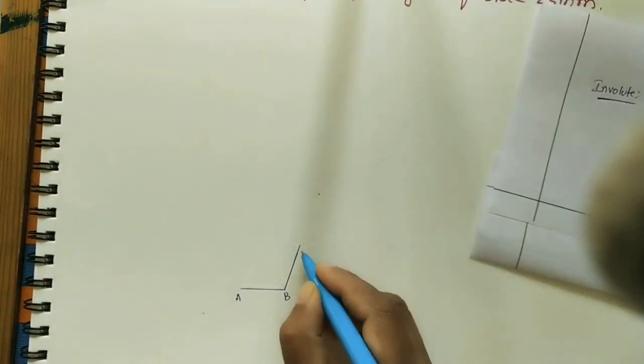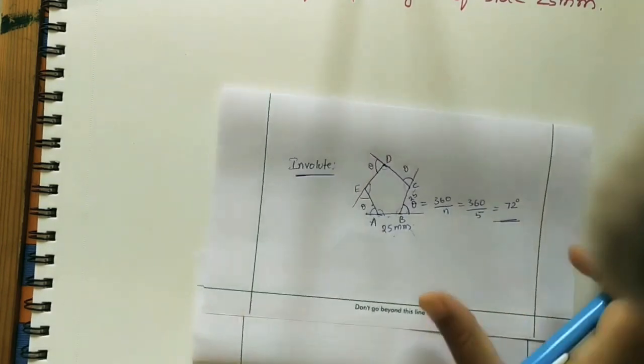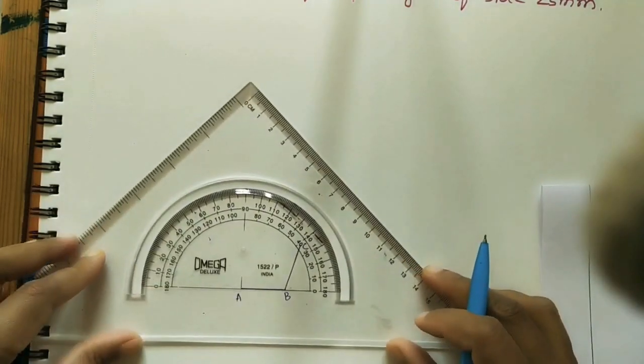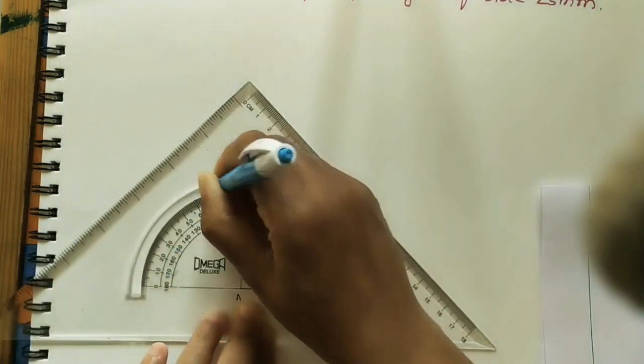This is 25mm. Mark C. This is outer angle. This is also 72. Take 72 here from this side. In this direction, take 25.